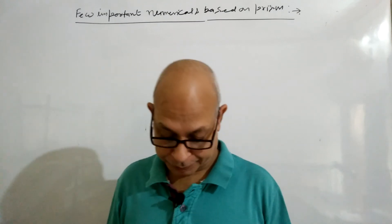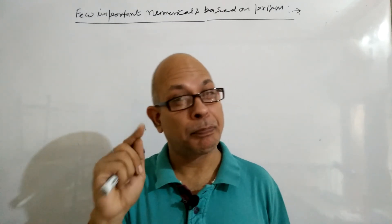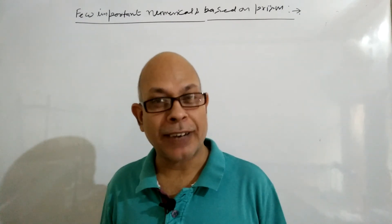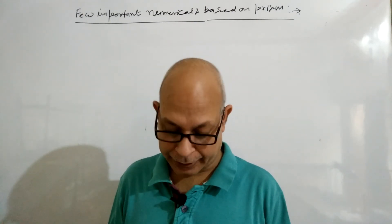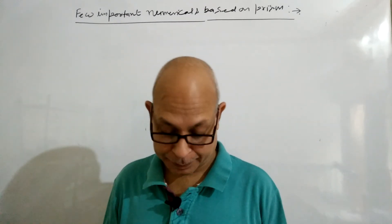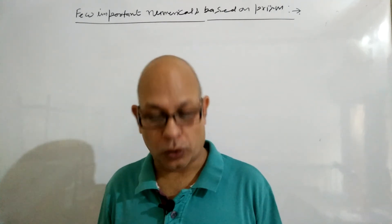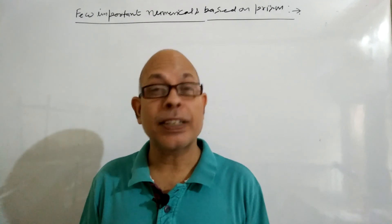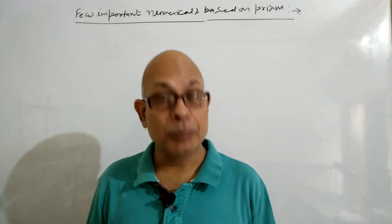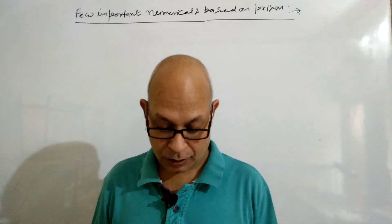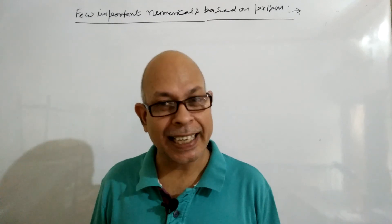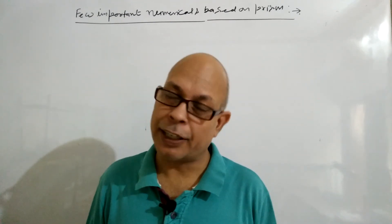First question: One face of a prism of refractive index 1.5 and angle 75 degrees is covered with a liquid of refractive index 3√2/4. What should be the angle of incidence of the light on the clear face of the prism for which light is just totally reflected at the liquid-covered face?